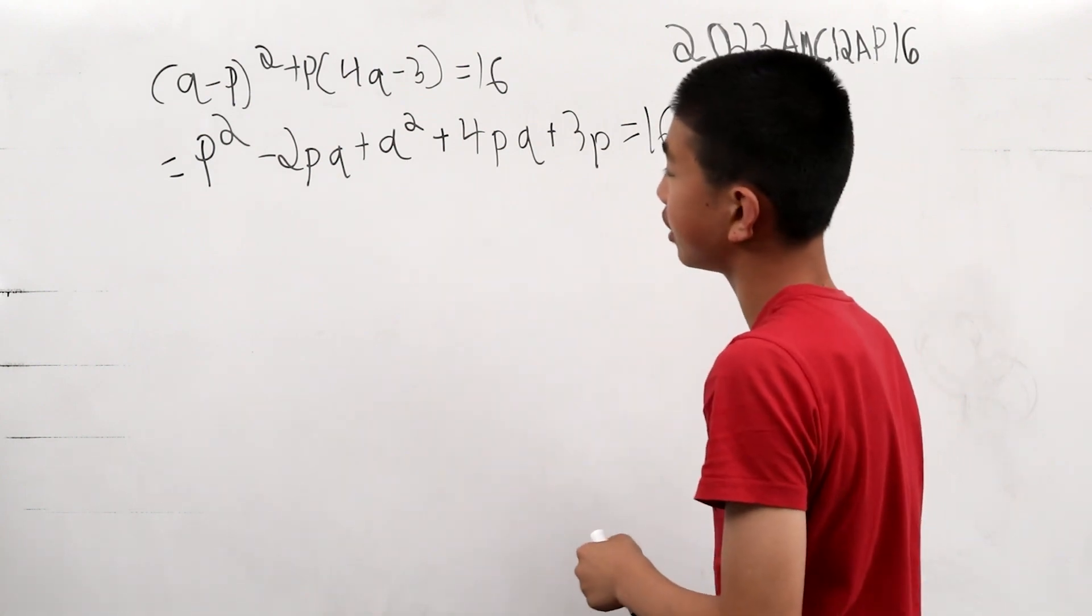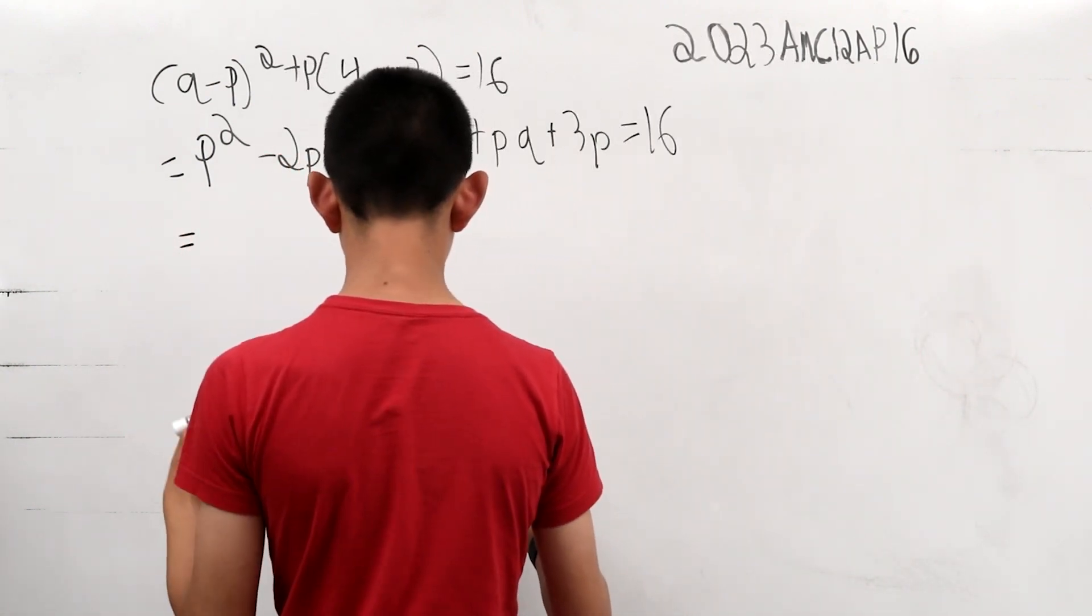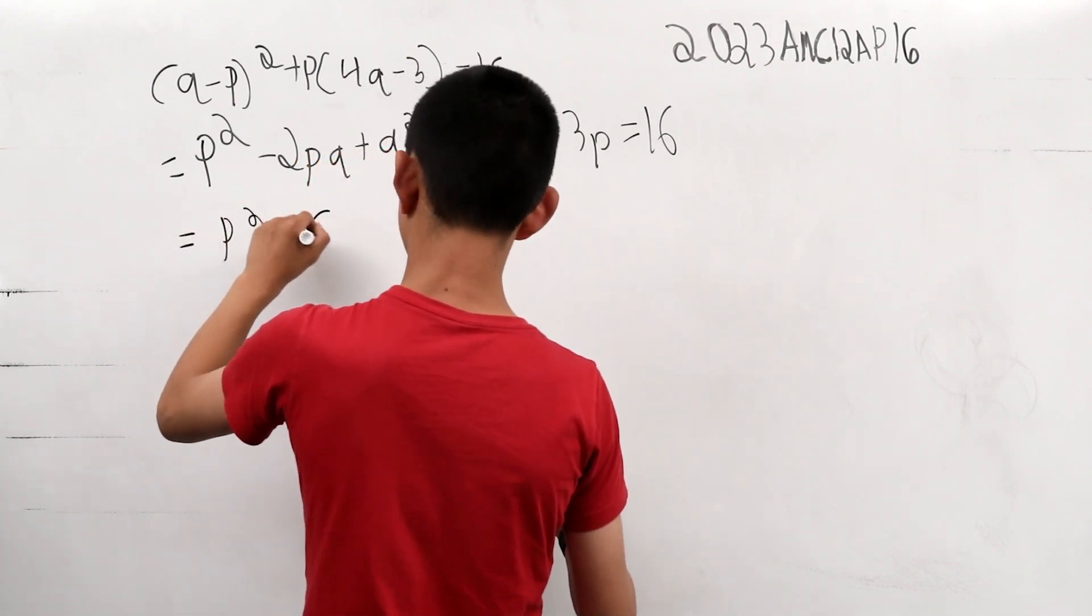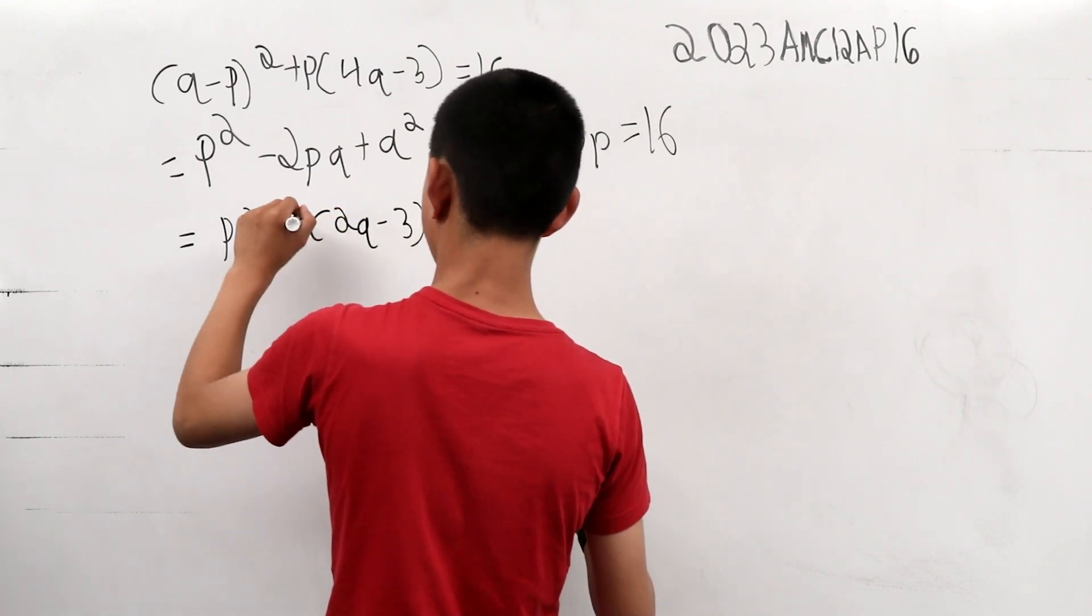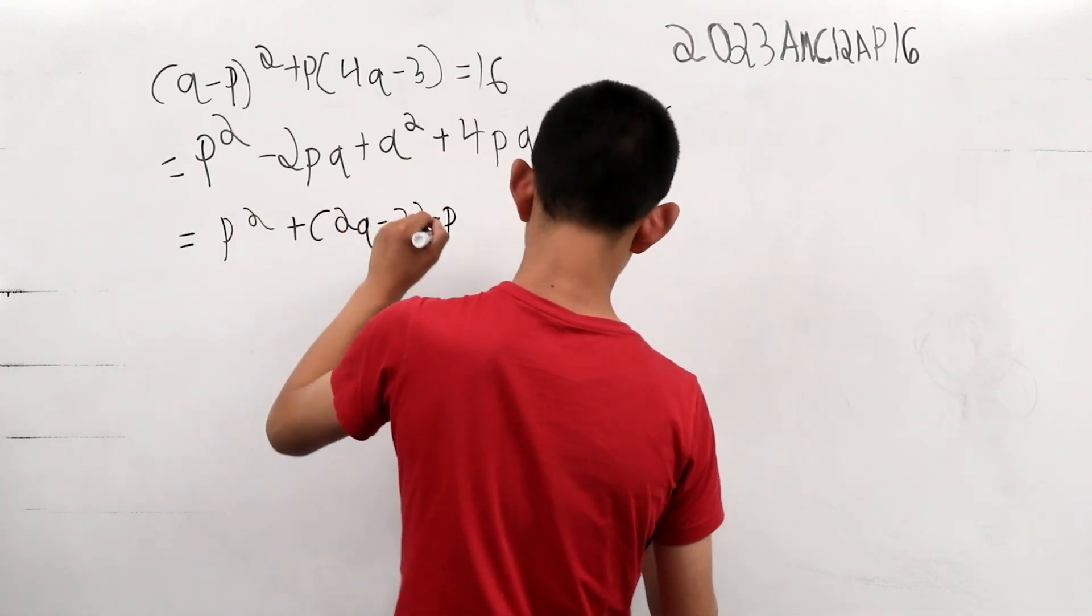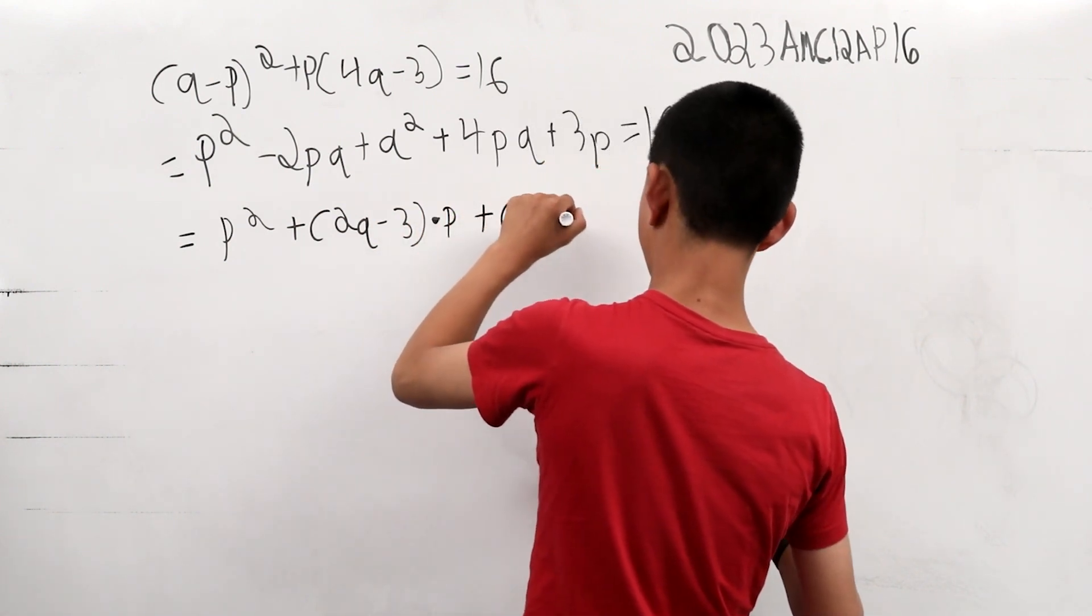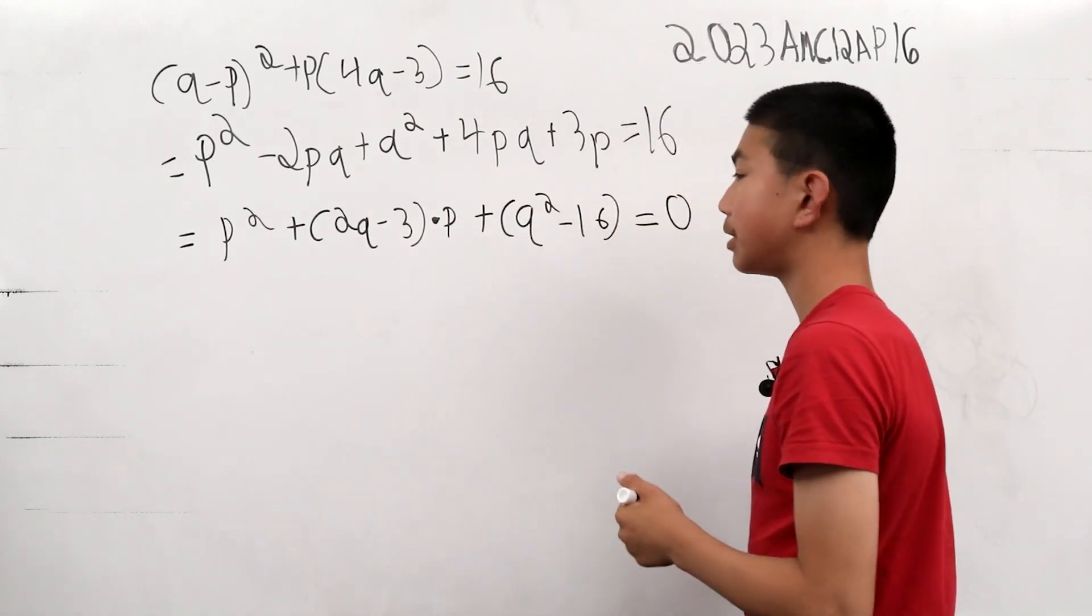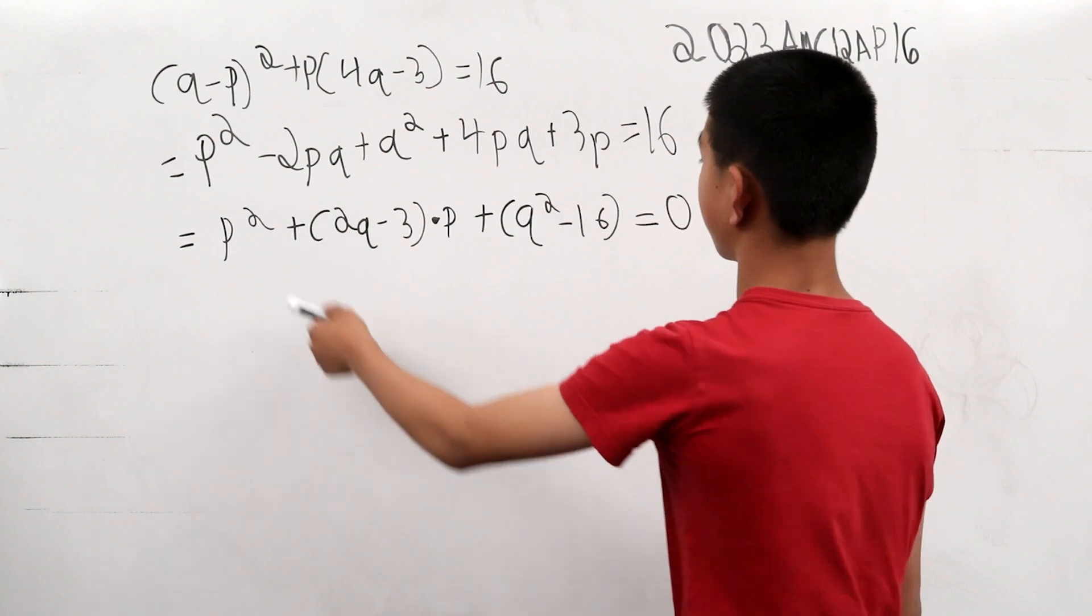Now, if we subtract 16 from both sides and factor it into what we can simplify, this is p squared plus 2q minus 3 times p plus q squared minus 16 equals 0. And the reason why we did that is so that we could make this into one big squared equation because we have a square here, another square here, and this is like what we have in the middle.